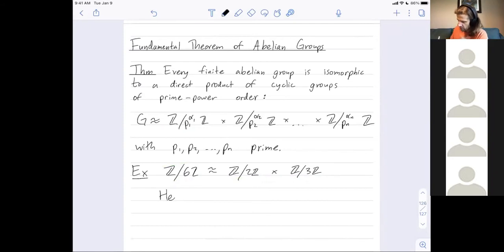So in this example, I've taken my first prime to be 2, my first power to be 1, right? There's sort of a hidden 2 to the first power here. My second prime is 3, right? And my second power is 1. There's a hidden 1 here. And I'm only looking at the product of 2 groups. So n is equal to 2.